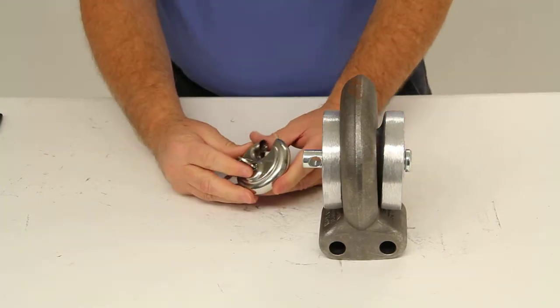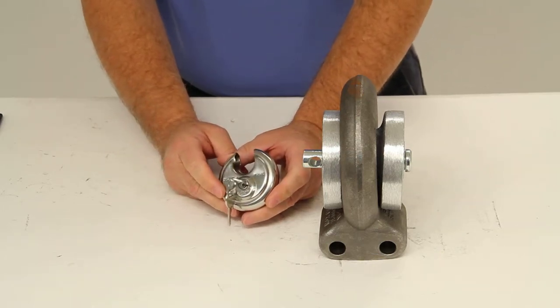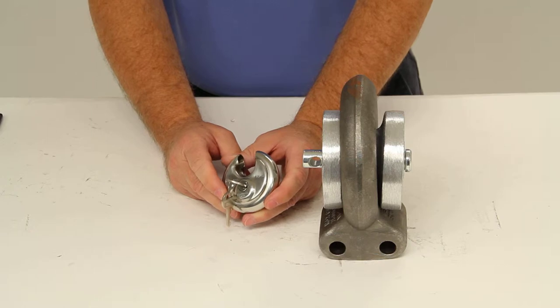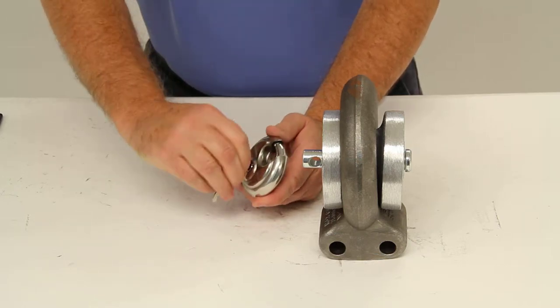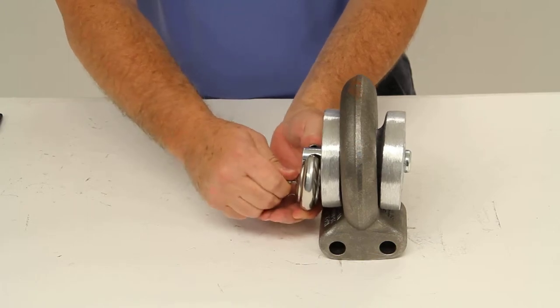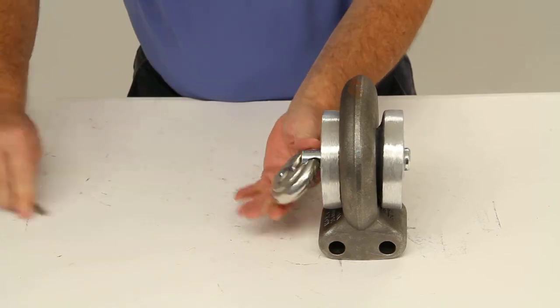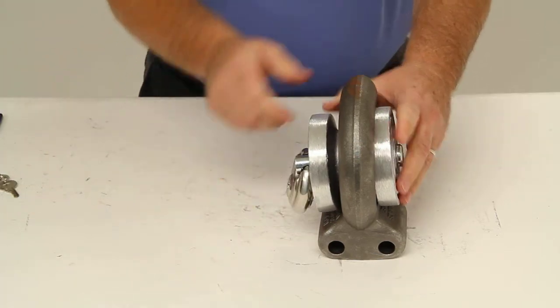Then you would use a padlock, which is sold separately. We recommend this Master Lock padlock, which is part number ML40D. This padlock will just slide until the shackle goes through the pin. And as you can see, it'll be locked into place.